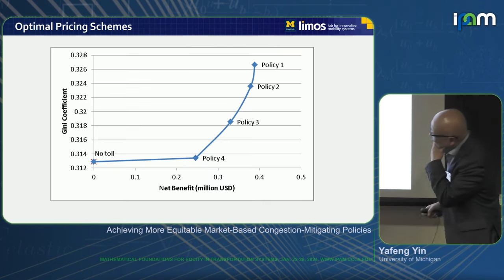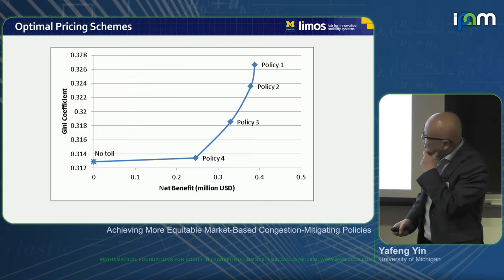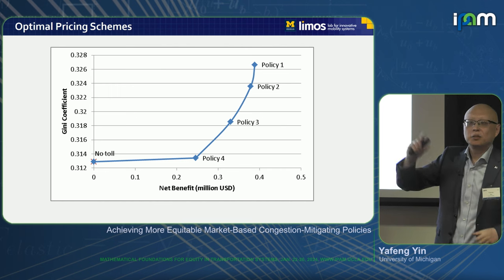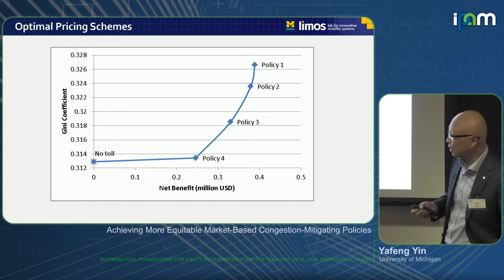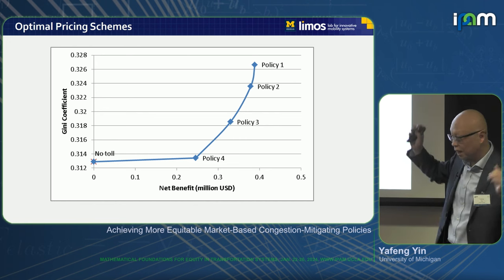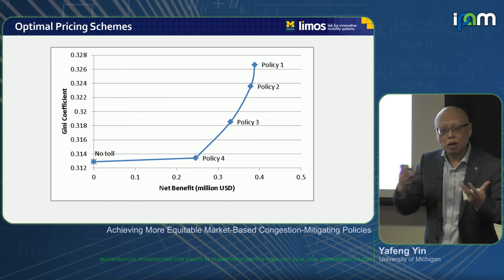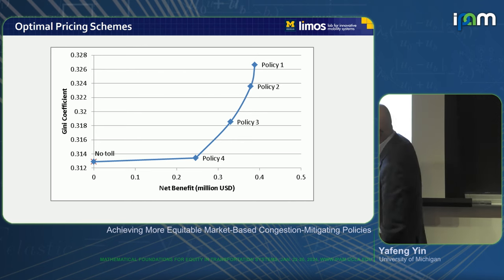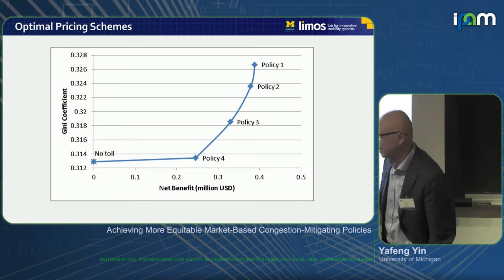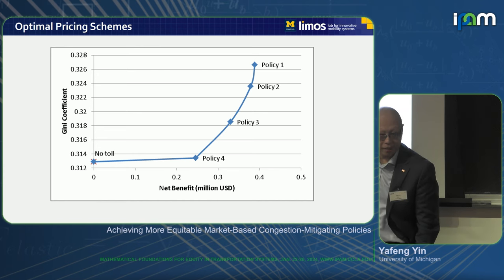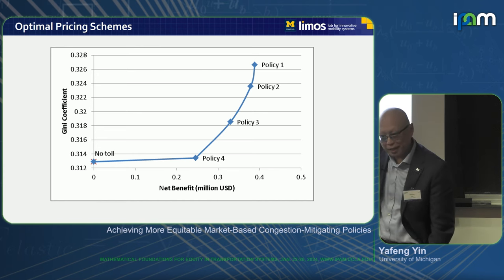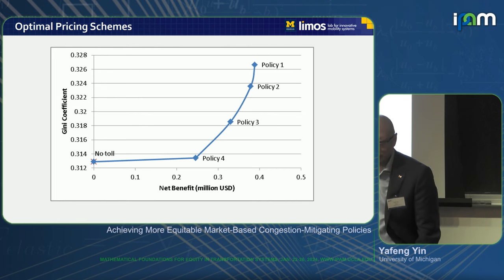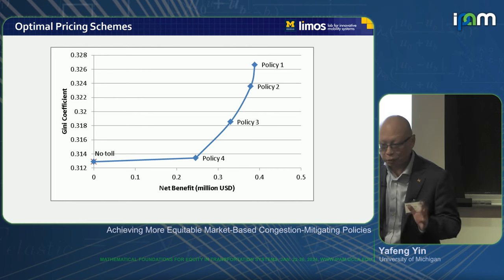Looking at the results: we change alpha — the convex combination weight on efficiency versus equity — and get different policies. This traces out the non-dominated, Pareto-optimal solution frontier. One key observation is that no matter how hard we try, the no-toll scenario is the most equitable one for that network. If you want to improve efficiency, you really have to compromise income-based equity — at least when using uniform tolling.